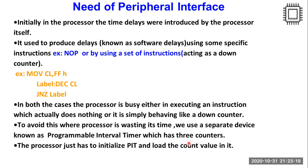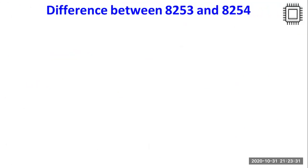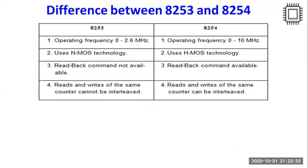This IC has three counters inside it and we can load these counters with a specific 16-bit count value inside it. Let us see the difference between 8253 and 8254 IC.